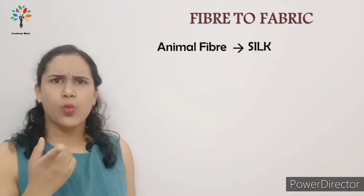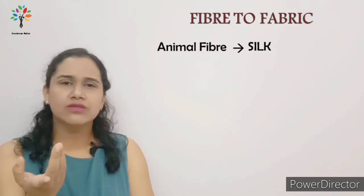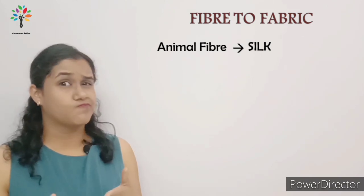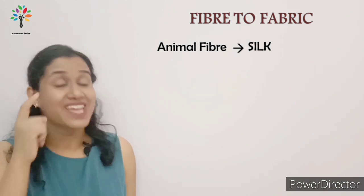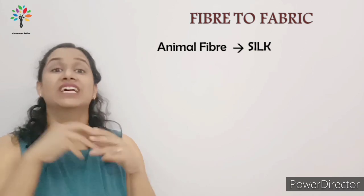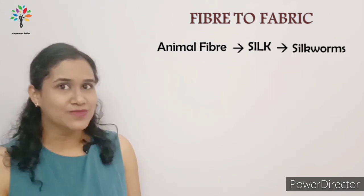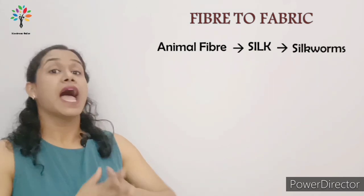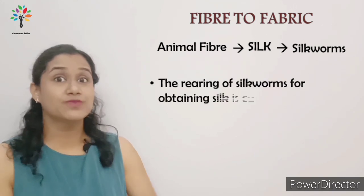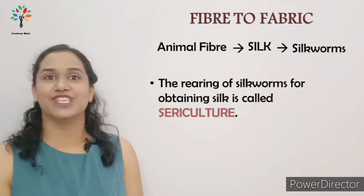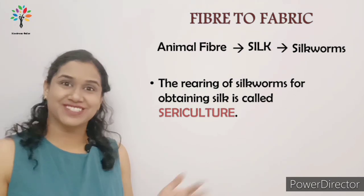From where do we get silk? Which animal gives us silk? We get the silk from the silk worms. And this process of rearing the silk worms to obtain the silk fibers is known as sericulture.